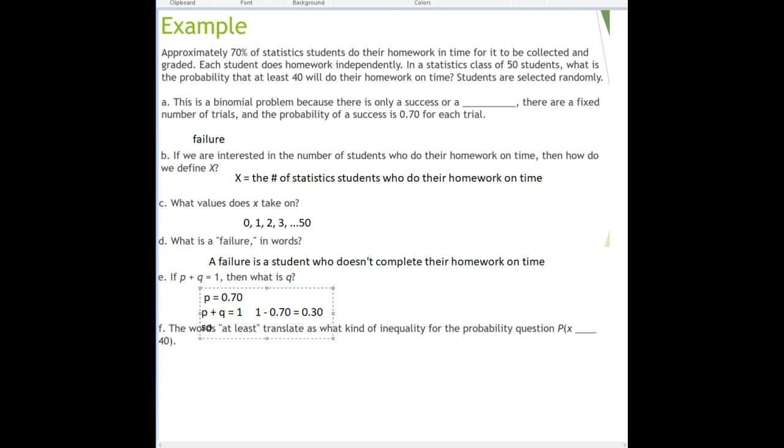So q is 0.30 or 30%. Lastly, the words at least translate as what kind of inequality for the probability question: probability of x blank 40?